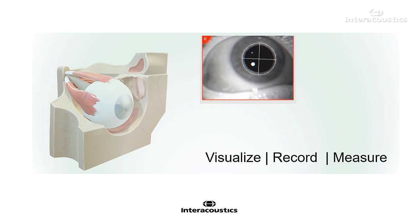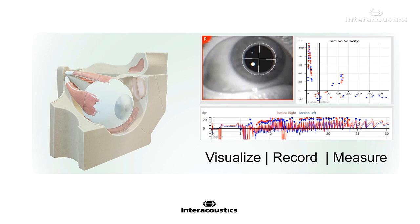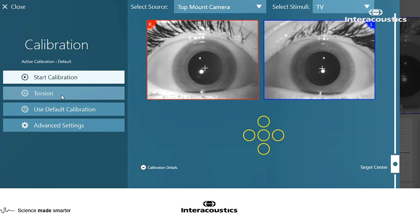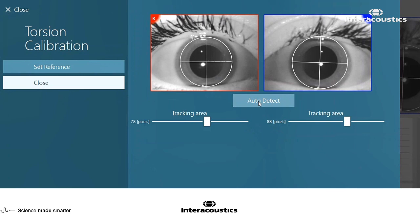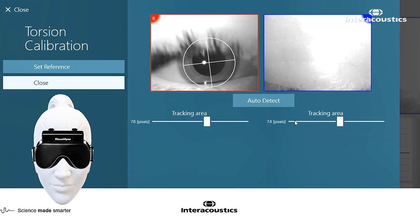Setting the reference on the iris of the eye is paramount to a successful torsional tracking. It's important to set the reference when the goggle cover is already in place and the pupils are dilated, as you will see in the video. Setting the reference is quick and will save time through the evaluation if done correctly at the onset.